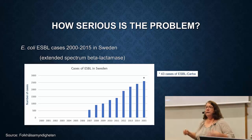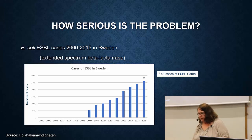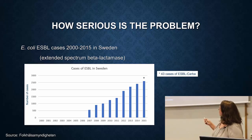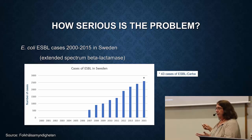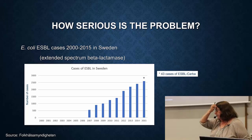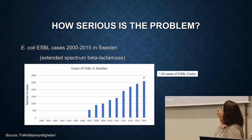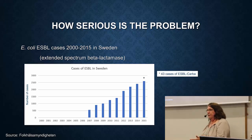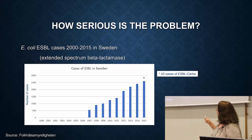In Sweden, we are relatively well off as far as antibiotic resistance — we have good healthcare. But even in Sweden, if you look at this one type of resistance called ESBL, between 2000 and 2015 you can see the numbers are rising rapidly. In 2015, there were actually 43 cases in Sweden of so-called ESBL CARBA, which is resistant to yet another antibiotic — a last resort antibiotic. The numbers are low, but the pattern is scary.